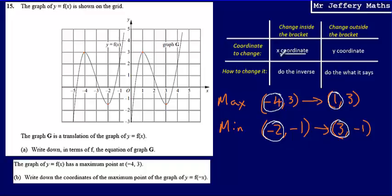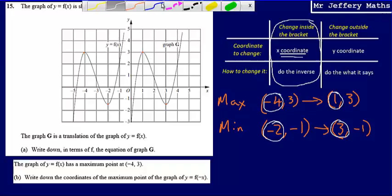So this means that I'm going to be looking at this column here, because the coordinate that's changing is the x coordinate. That means there's going to be a change inside the bracket of y equals f(x). So there's going to be a change inside the bracket.